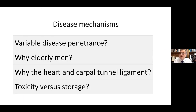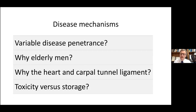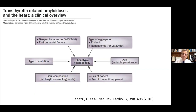Why do we see this variable disease penetrance? Why is it a disease of predominantly elderly men? What is different about TTR pathophysiology or the hearts of elderly men compared to women? Why just the heart and the carpal tunnel ligament? And this issue of toxicity versus storage — when I suggest this to some clinical amyloid colleagues, they tell me to calm down, that I'm just a cardiologist and this is not a toxic disease. Well, I'll come back to that in a moment.